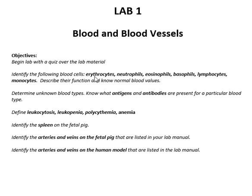The first thing we're going to look at are the different types of formed elements — that's what they call them — or cells that are in your blood. You have erythrocytes, which are your red blood cells, and then you have five different kinds of white blood cells. We'd like for you to know what their function is: why would you see an elevated neutrophil count, and what would be the reason eosinophils would increase? When you get your blood drawn, they can do a variety of tests. Usually this is called a differential — they tell you how many white blood cells you have, and if they're elevated, they figure out which one is elevated: neutrophils, eosinophils, basophils, lymphocytes, and monocytes.